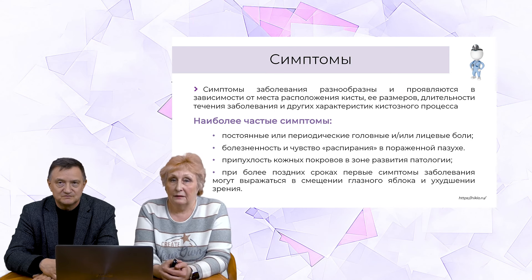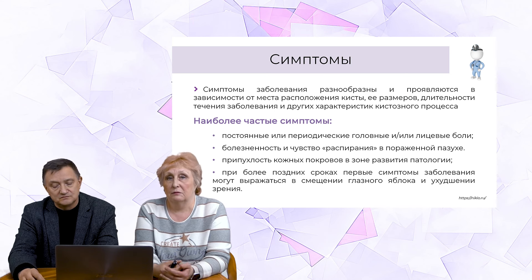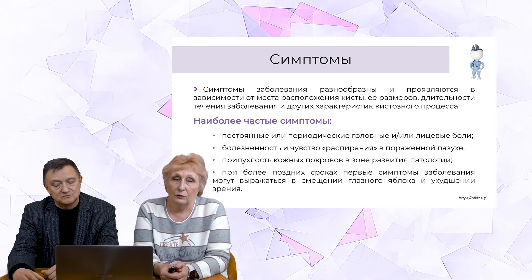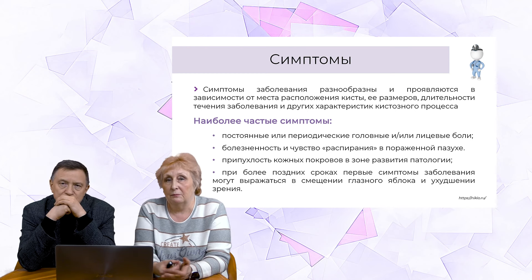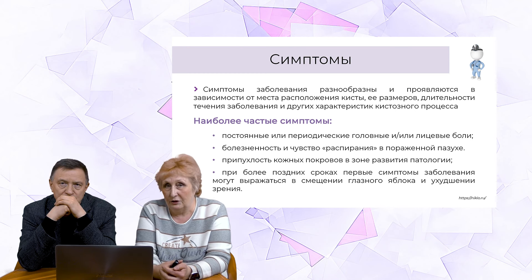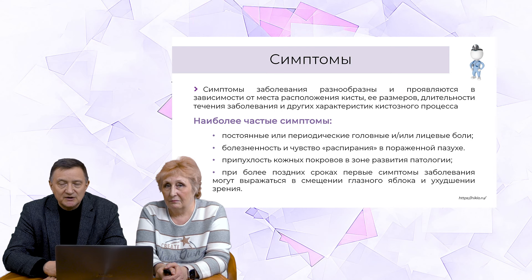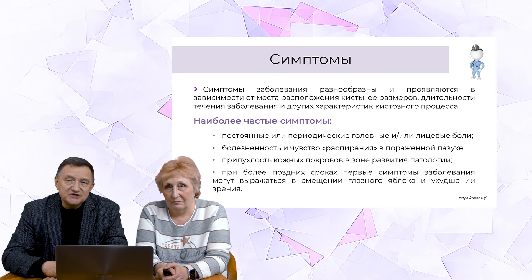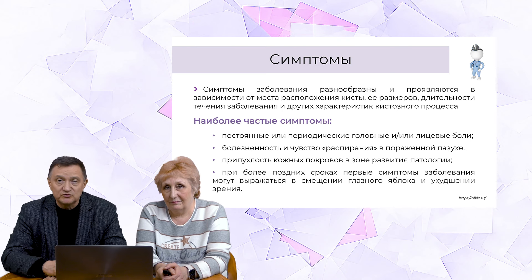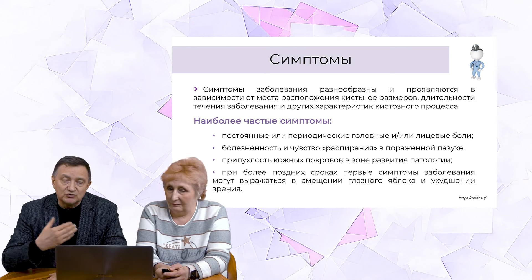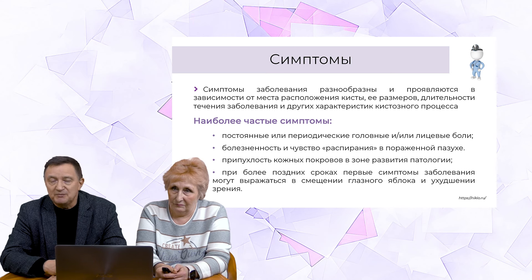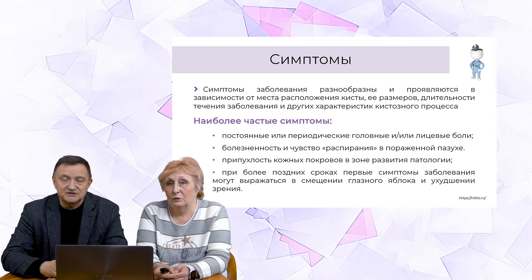Иногда кисты могут спонтанно лопнуть, и тогда у пациента из одной из половин носа начинается стечение янтарной жидкости, которая на воздухе довольно быстро застывает до студня. Как правило, этот процесс быстрый, но бывают случаи, когда выделения наблюдаются порционно в течение нескольких дней. Важно предупредить пациента, что такая ситуация возможна, иначе это приводит в панику. Пациенты иногда говорят: «Доктор, у меня мозги потекли из носа». Это может быть кратковременное опорожнение кисты — она может снова наполняться и снова опорожняться.